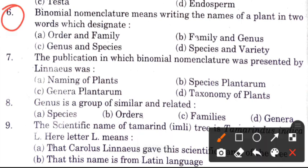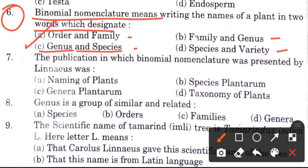Question 6: Binomial nomenclature means writing the name of a plant in two words. What do these two words designate? Options are: order and family, family and genus, genus and species, species and variety. The answer is C, genus and species — the first name is genus and the second is species.